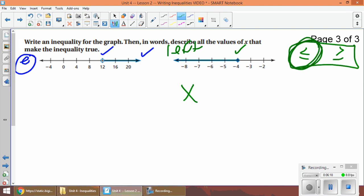So less than or equal to. So x is less than or equal to, and what's my value? My circle's over, over negative four. So what does that mean? It means all values for x must be negative four or smaller.